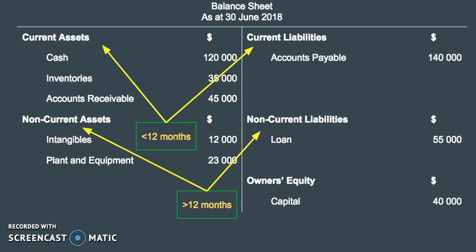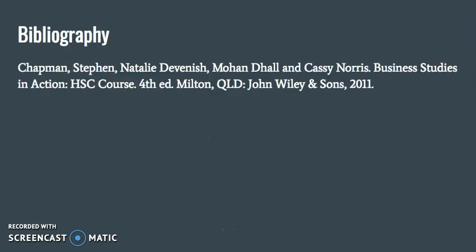Now, as you can see through all those numbers, the amount of money on the assets side equals the figures on the liabilities plus owner's equity. It needs to balance, hence the name balance sheet. So I hope this brief video on balance sheets has been useful. The next video will be looking at financial ratios, starting with liquidity. Thank you.